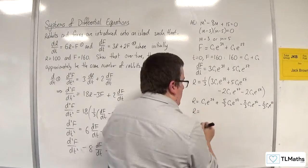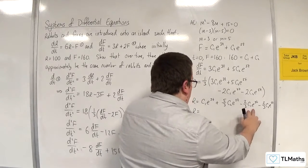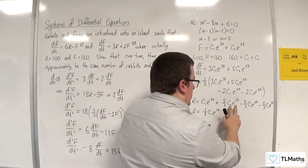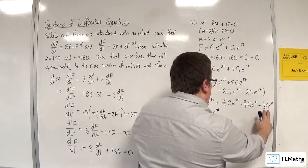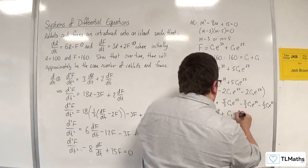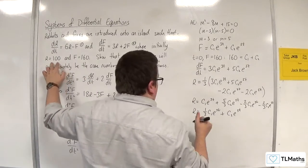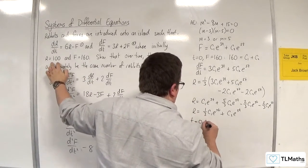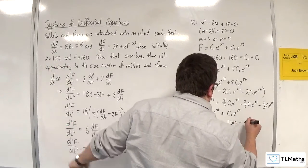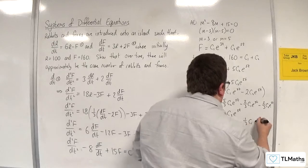Simplifying, the e^(3t) terms give (1/3)c₁e^(3t) and the e^(5t) terms give c₂e^(5t). So r = (1/3)c₁e^(3t) + c₂e^(5t). Since initially r = 100, at t = 0 we get 100 = (1/3)c₁ + c₂.